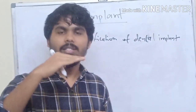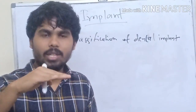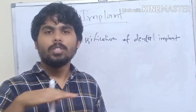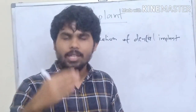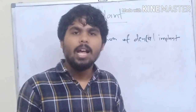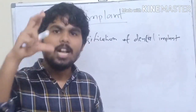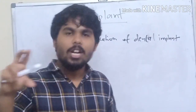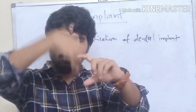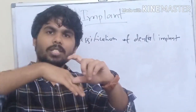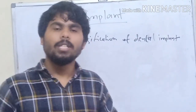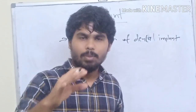On the basis of placement within the body tissue, it can be placed under the mucosa — that is called intramucosal — under the periosteum — subperiosteal — inside the bone — that is endosteal — and transosteal or transmandibular, which pierces both cortices of the bone.